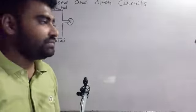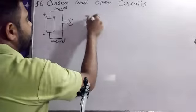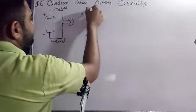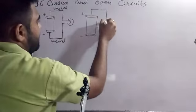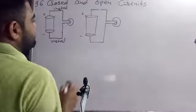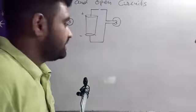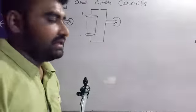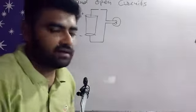Now I am drawing another circuit — another pencil cell, positive and negative terminals, again with metal wire and an electric bulb. The circuit comes back around but here we have one gap. That means the circuit is not complete — it is not closed — so no current is flowing through this circuit.